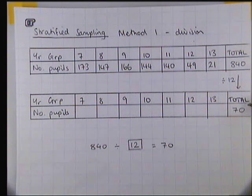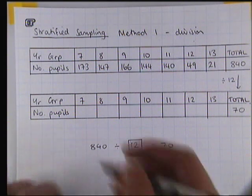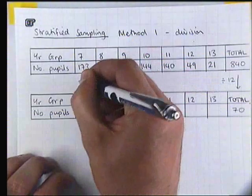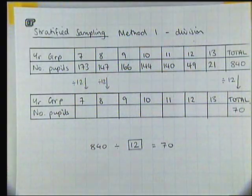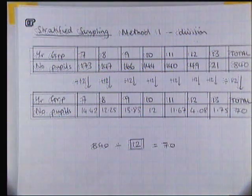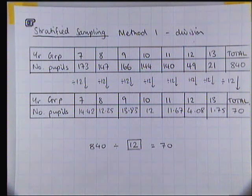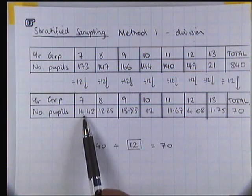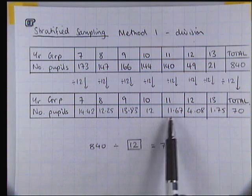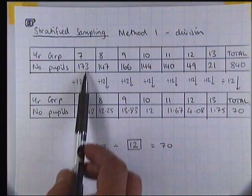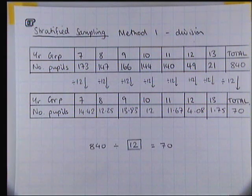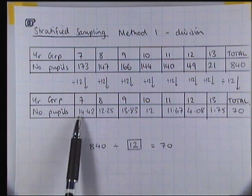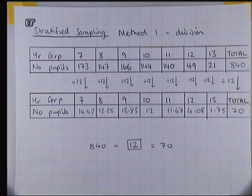If we're dividing that total by 12, to keep everything else in proportion, we're going to divide every number by 12. Every single number will be divided by 12. I've just done that and we've made 14.42, 12.25, etc. These numbers along the bottom here are the results of having divided by 12. So 173 divided by 12 gives you 14.42. I've rounded that to two decimal places.